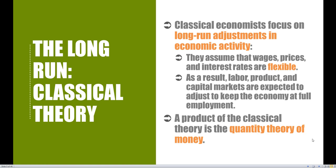With the classical economists, they focus on long-run adjustments in economic activity. They assume that all the major macroeconomic variables — wages, prices, and interest rates — are all considered to be flexible, meaning they adjust instantaneously to the long-run equilibrium. As a result, labor, product, and capital markets are expected to adjust to keep the economy at full employment.